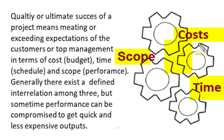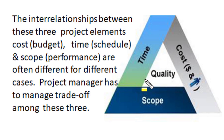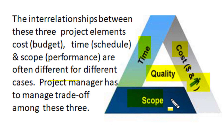Generally, there exists a defined proportional relation among these three project criteria, but sometimes depending upon available opportunities, one or two performance criteria can be compromised or enhanced to get desired results — such as quick and less expensive outputs. When we enhance time and cost criteria, we have to compromise performance or scope. Often in varying circumstances, different project cases choose different combinations of these three criteria, and a project manager has to manage the trade-off among cost, time and scope.